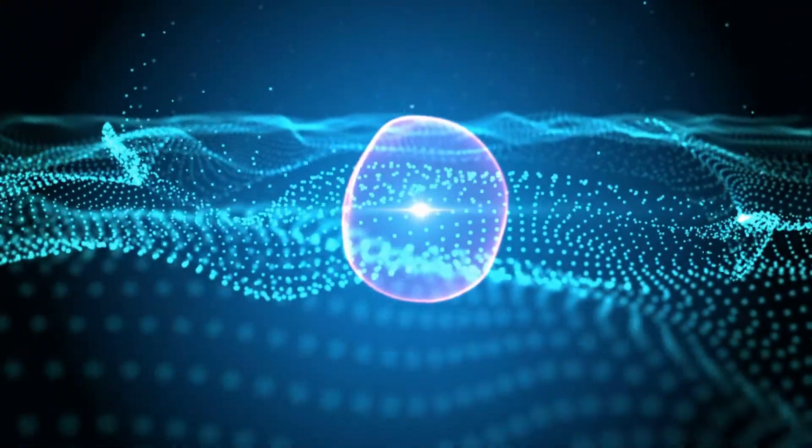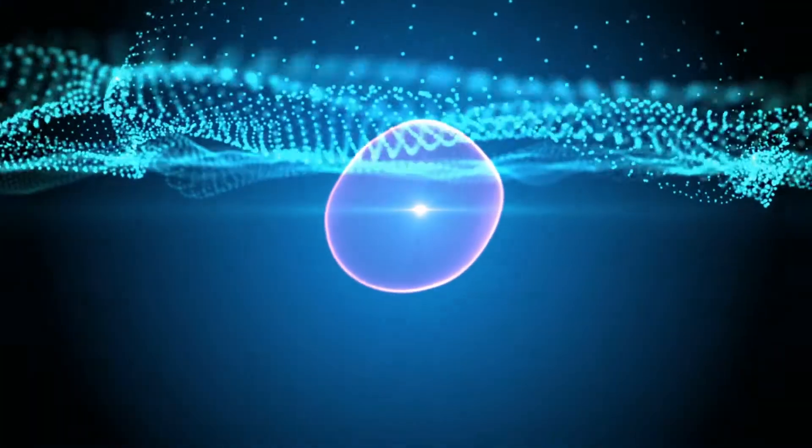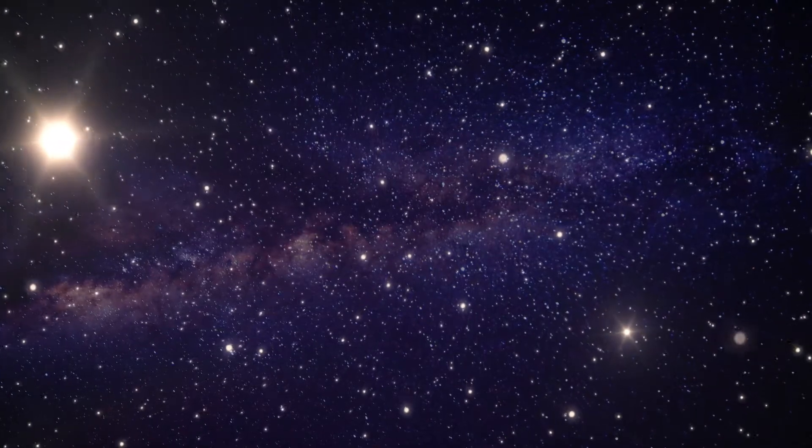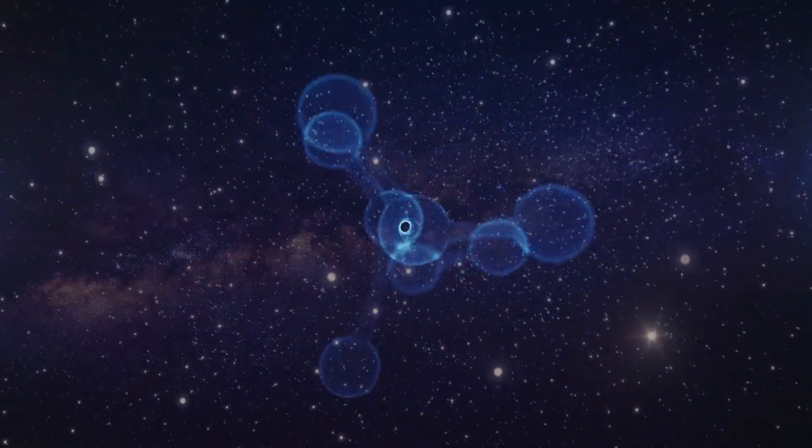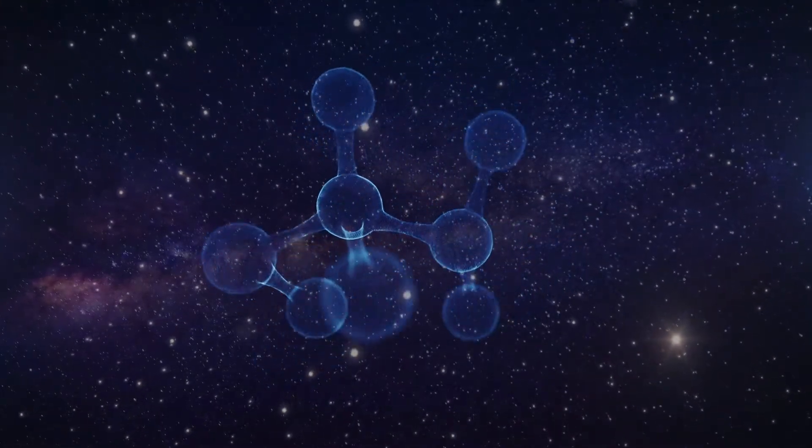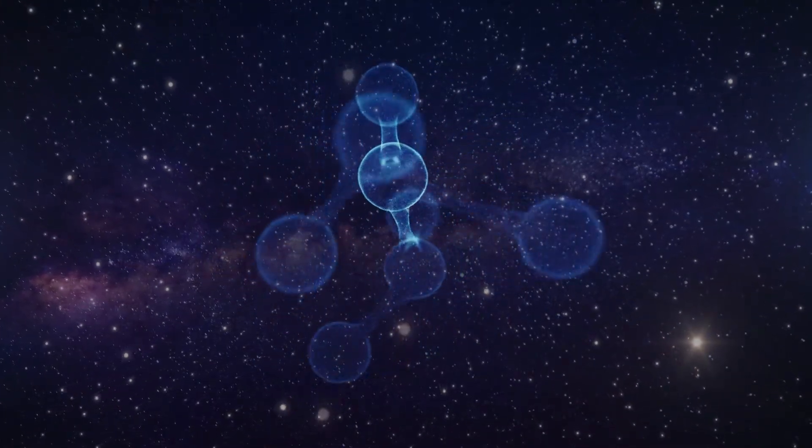WIMPs and axions are non-baryonic elementary particles. Baryonic dark matter, composed of atoms or molecules, has been ruled out in conventional cosmology because it is believed there's not enough of it in the universe.